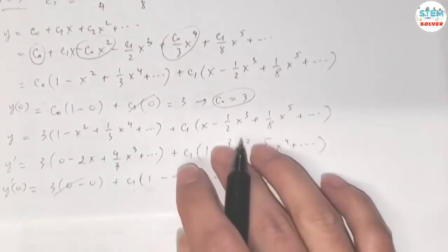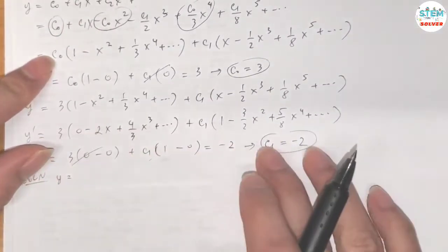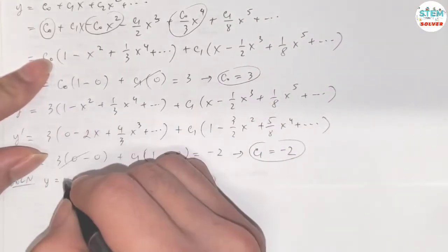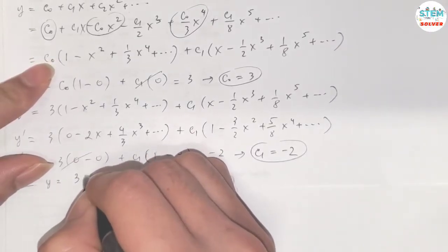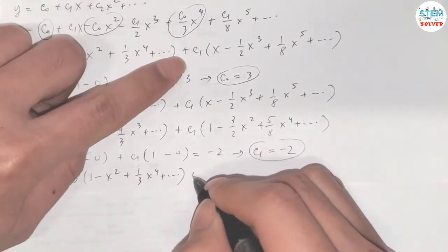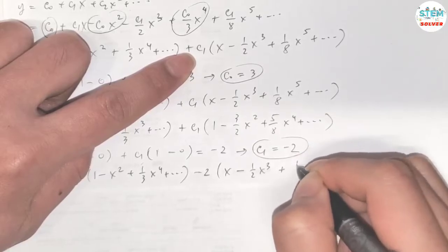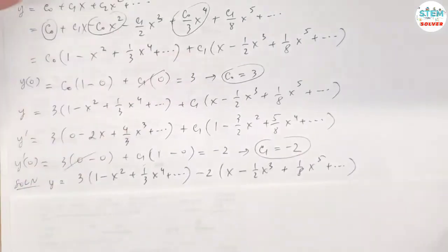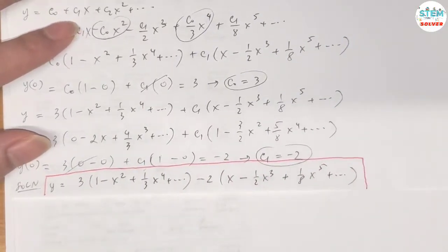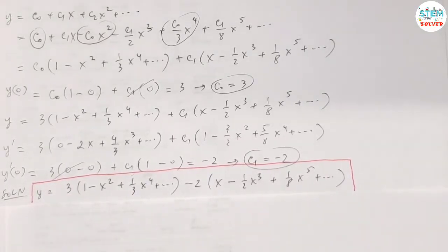So our final solution is obtained by replacing c_0 with 3 and c_1 with negative 2: y equals 3 times (1 minus x squared plus (1/3)x to the 4th plus dot dot dot) plus negative 2 times (x minus (1/2)x cubed plus (1/8)x to the 5th plus dot dot dot). This is the final solution of the initial value problem, and all constants are now determined.